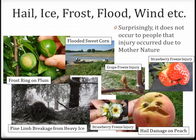A peach severely impacted by hail is shown here — you need to be on top of your disease control because those wounds until they heal are very open to disease and insect attack. A flooded sweet corn field is pictured in the upper center. Any edible portion that's come in contact with flood waters is not considered safe to consume. Some contaminants can actually be absorbed by the plants, so washing off is not always sufficient. Any edible component that has made contact with flood water is not considered safe to eat.